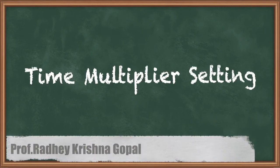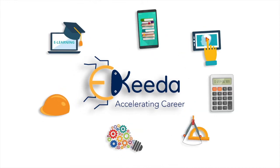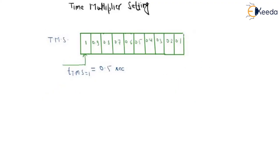Now we are studying time multiplier setting. This is the concept in which if we will change the TMS, then the operating time will change.